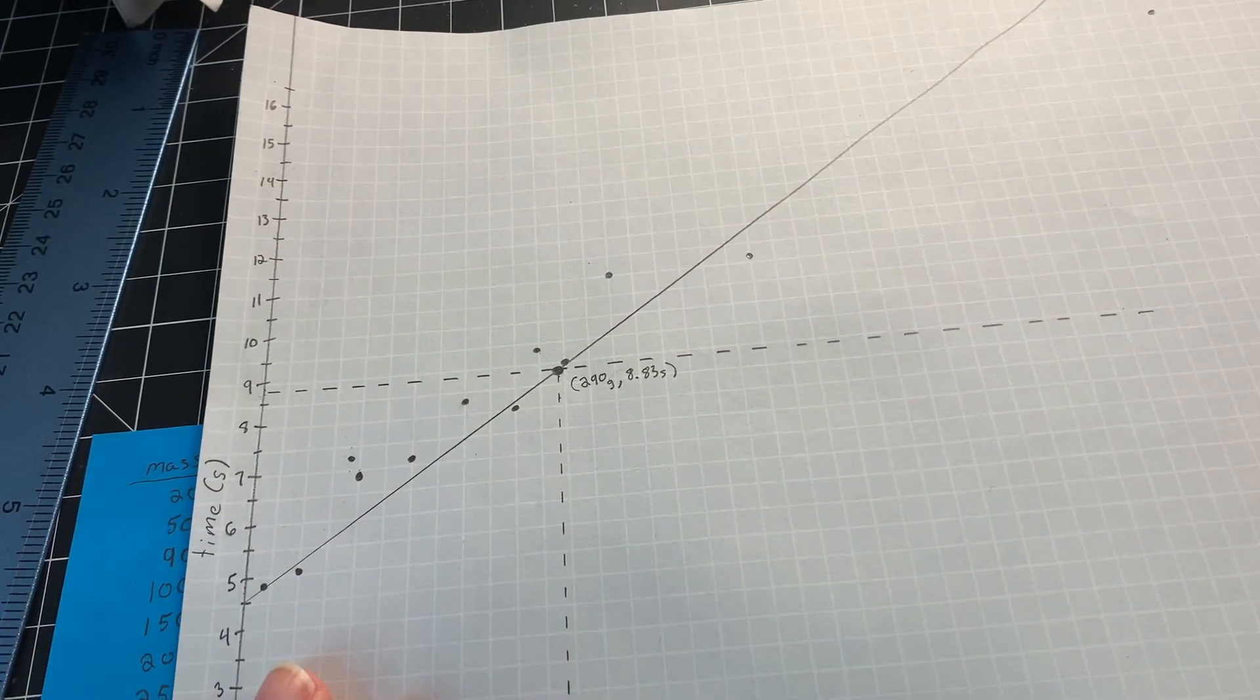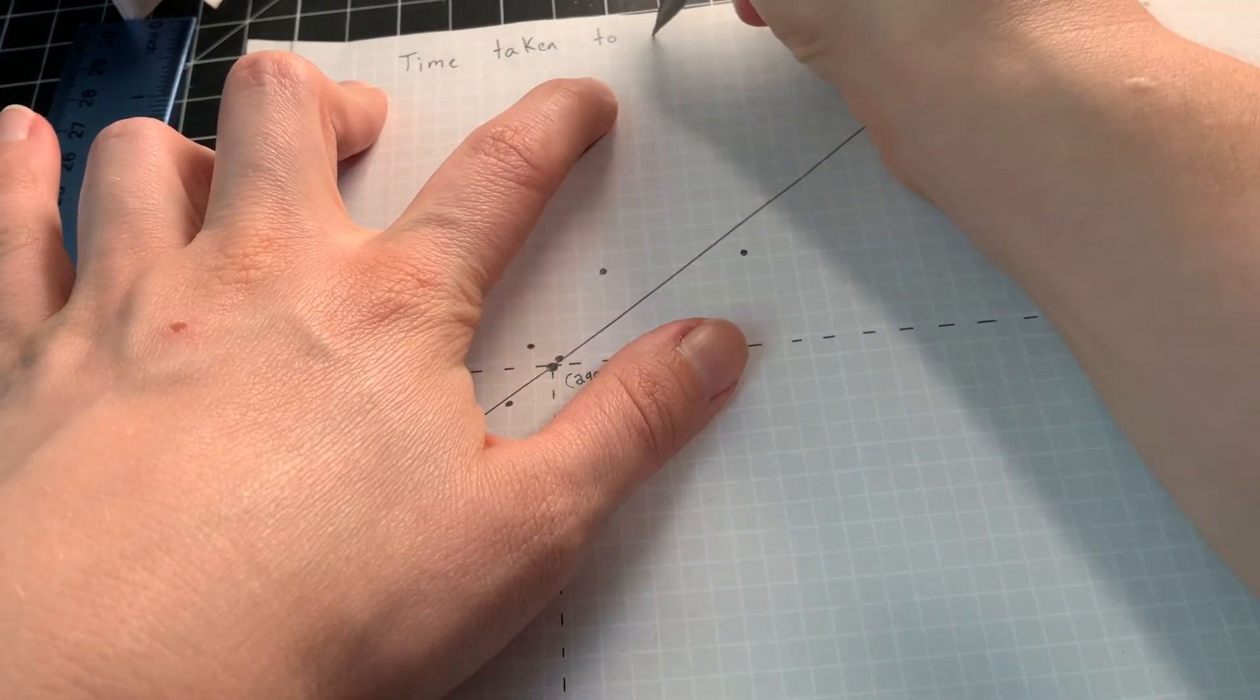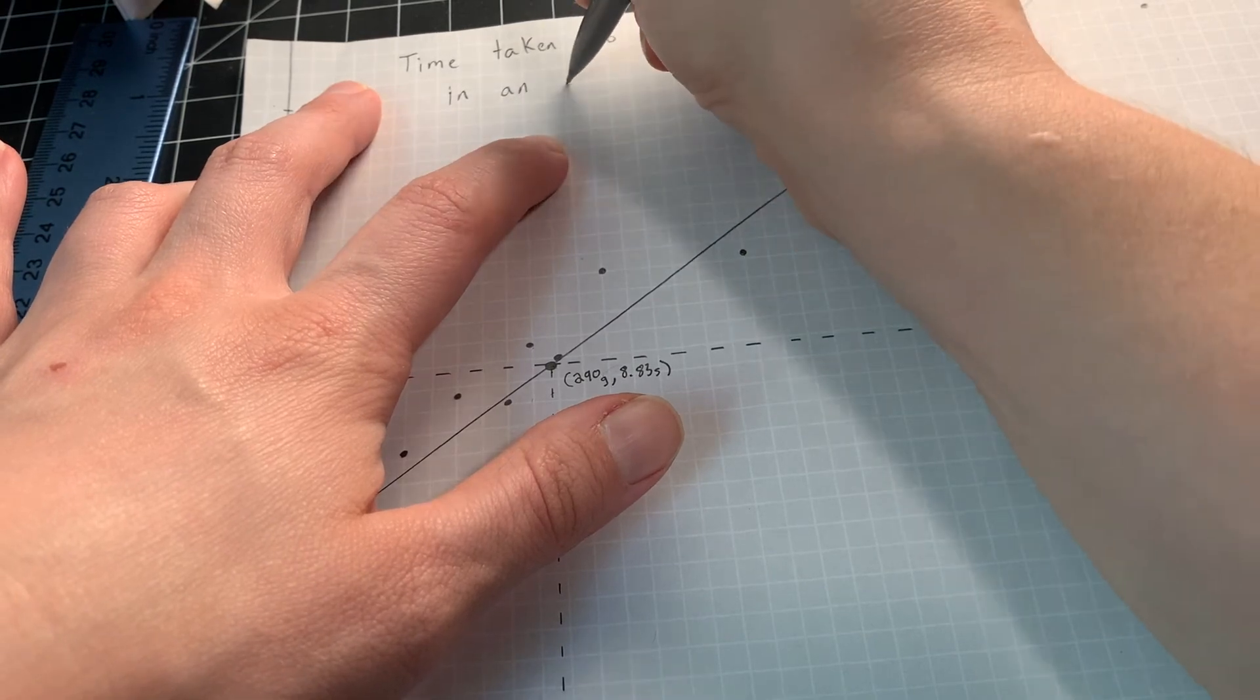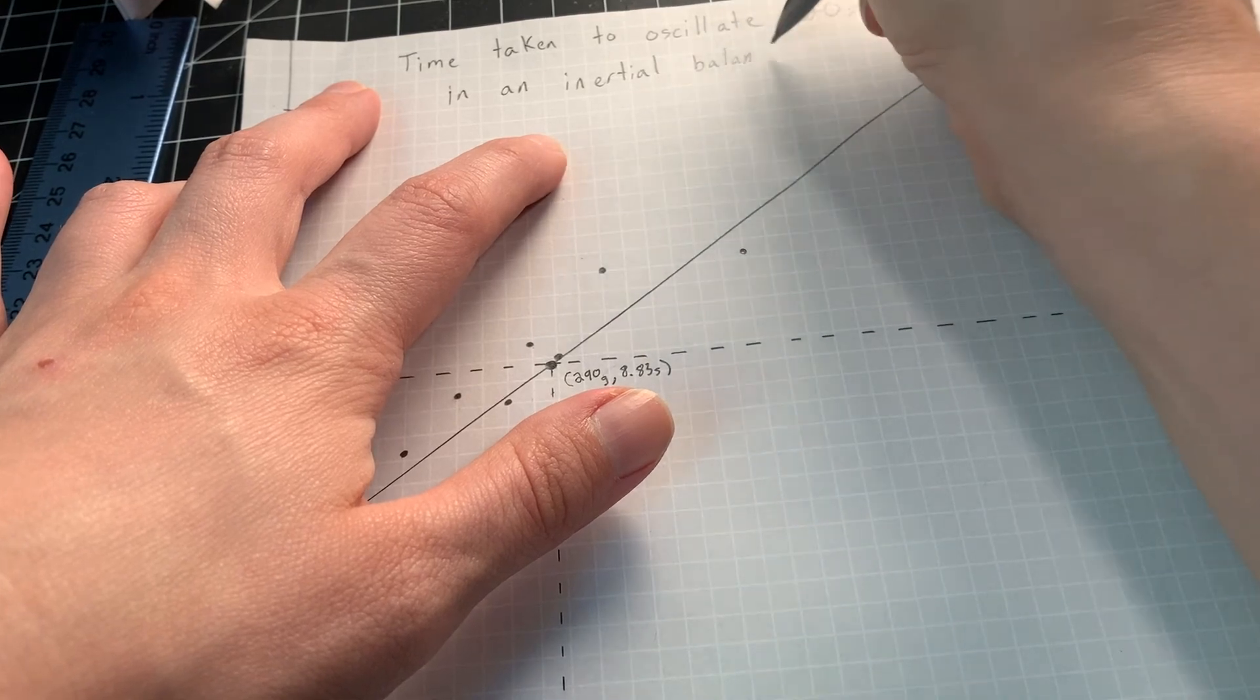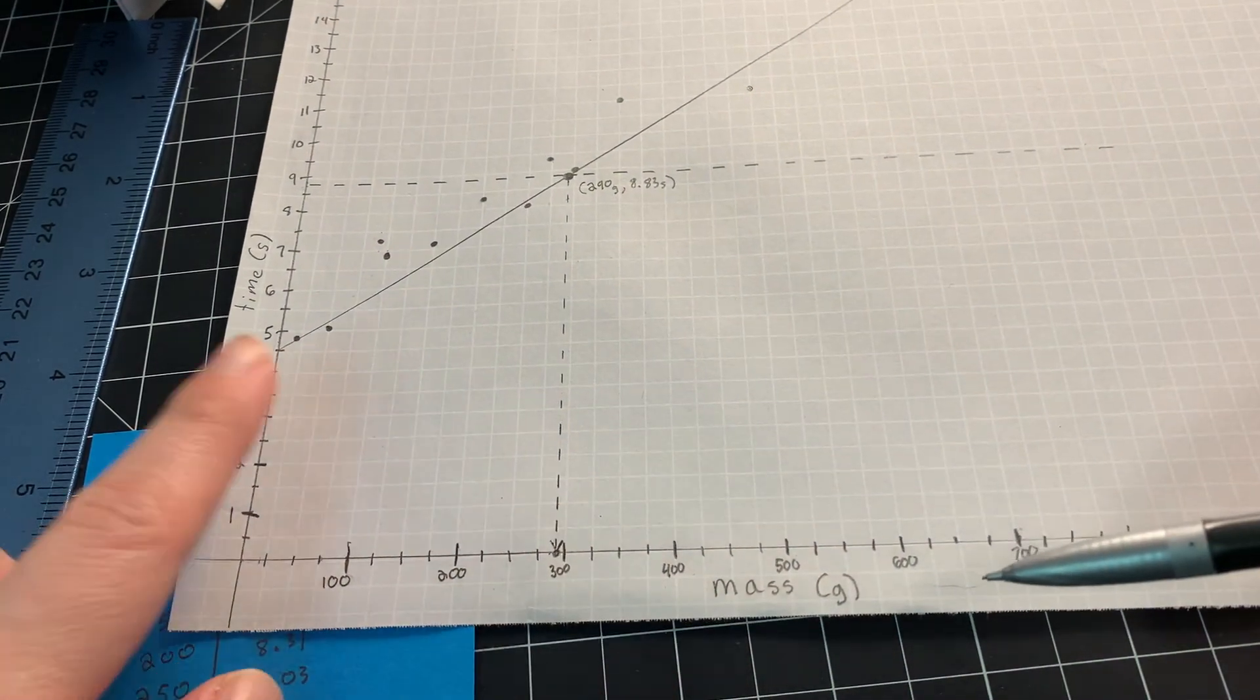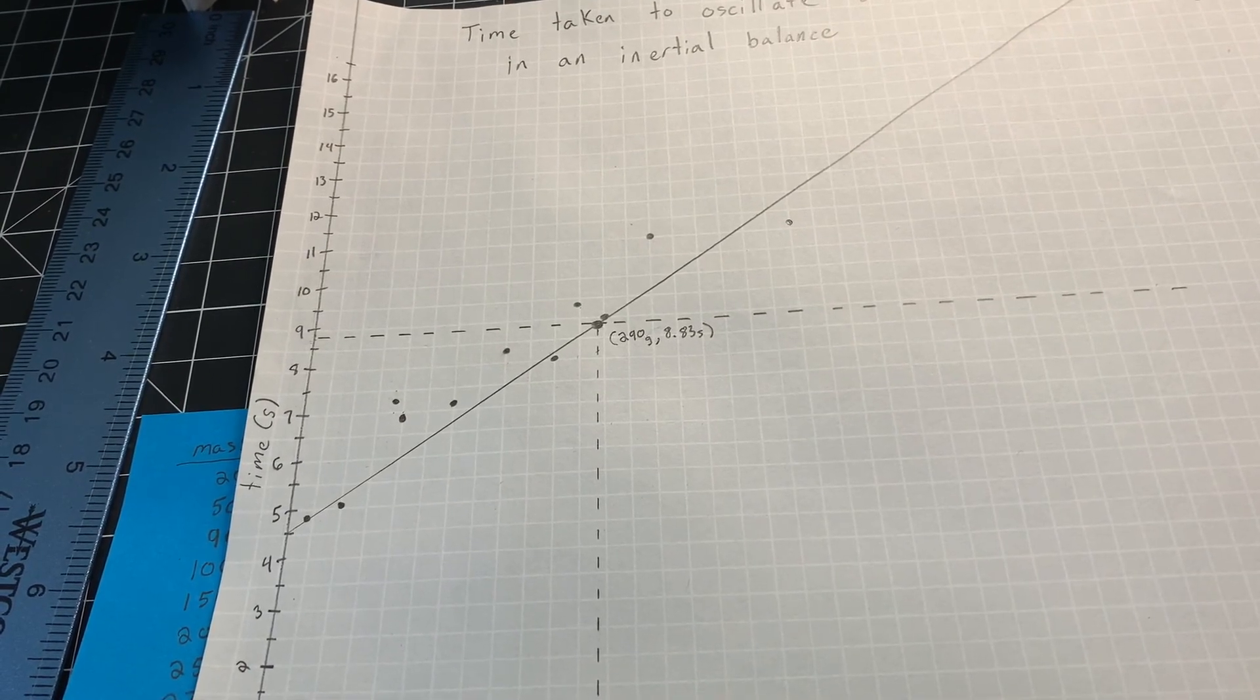Now the last thing that this needs is a title. So we always want to make sure we give our graphs a descriptive title. So I'm going to call this the time taken to oscillate 20 times in an inertial balance. And I'm going to take a picture of this graph, one where I can see my x-axis label and my y-axis label and my title all in one frame. And that will get put into my lab report as my graph.